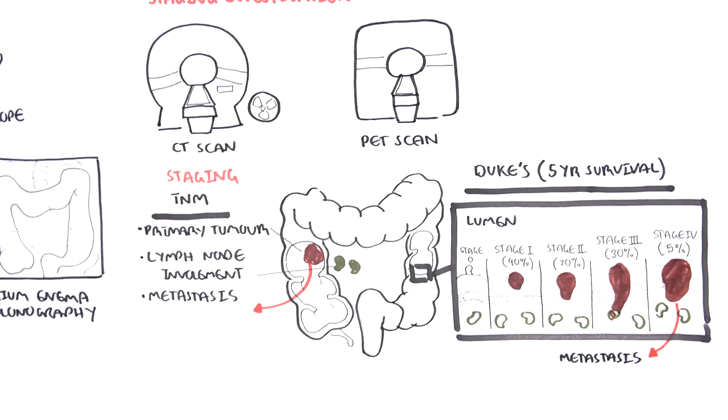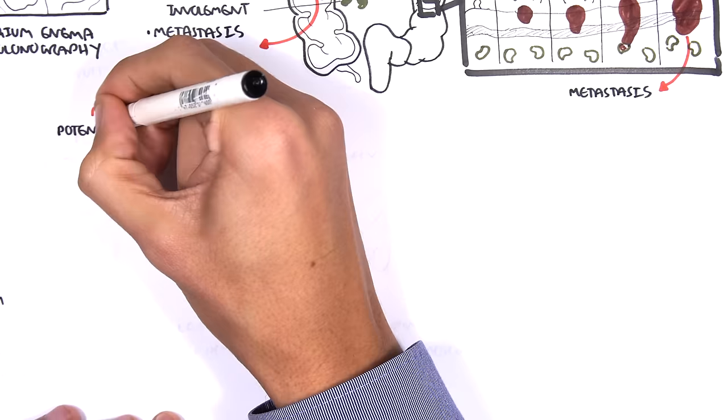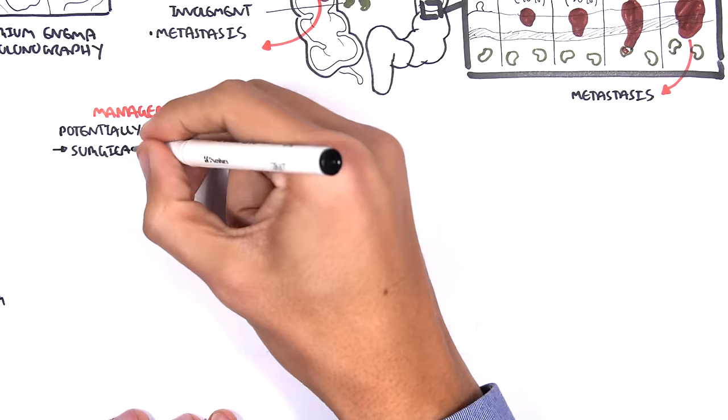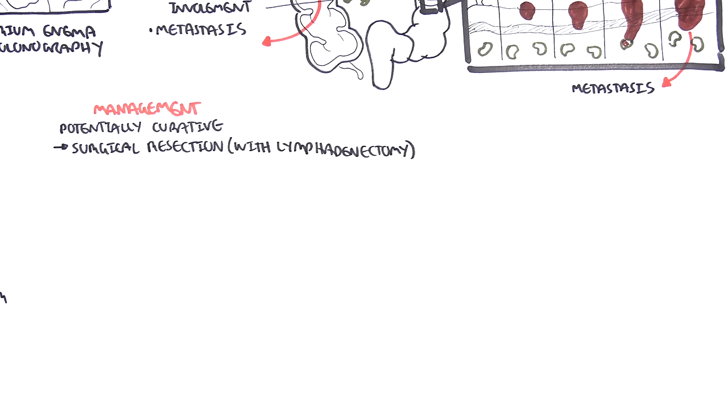Management of colon cancer. Colon cancer is potentially curative with surgical resection of the colon, colectomy, with also surgical resection of the lymph nodes, lymphadenectomy. Surgical resection of the colon is performed depending on where the tumor is located. And when surgically removing parts of the colon, it is important to take into consideration the blood supply of that part of the colon, as well as the lymph drainage of that part.